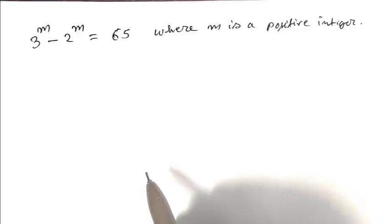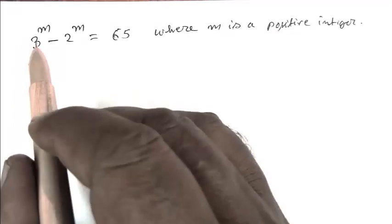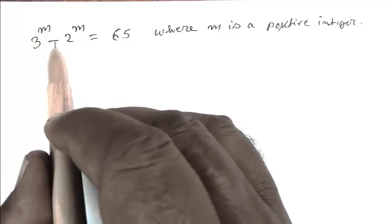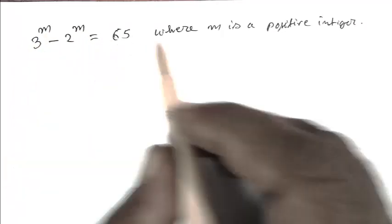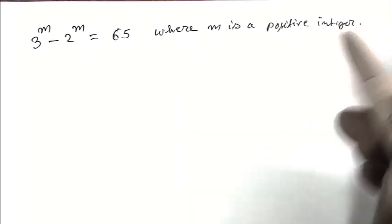Hello friend, welcome to my channel Quest for a Reason. Today I am solving an equation: 3 to the power m minus 2 to the power m equals 65, where m is a positive integer.